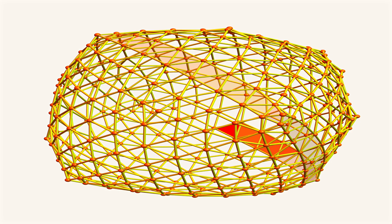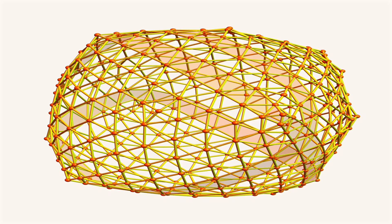And here is an example of a two-dimensional sphere, discrete two-dimensional sphere, where we don't have a boundary.